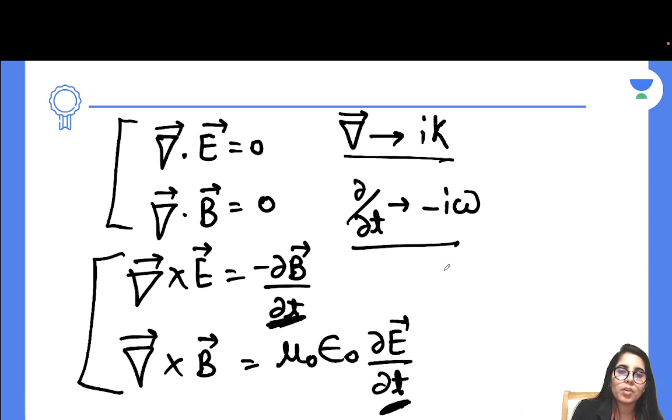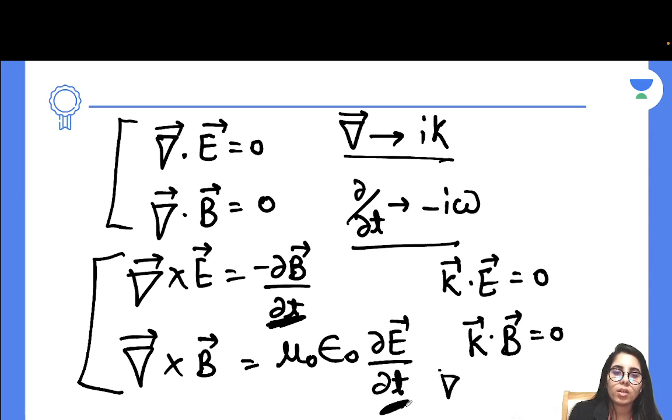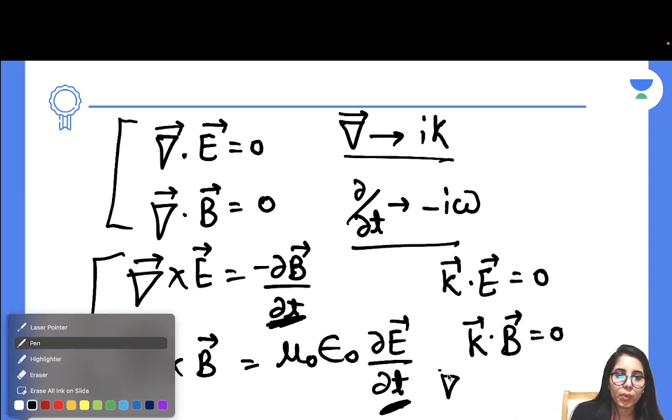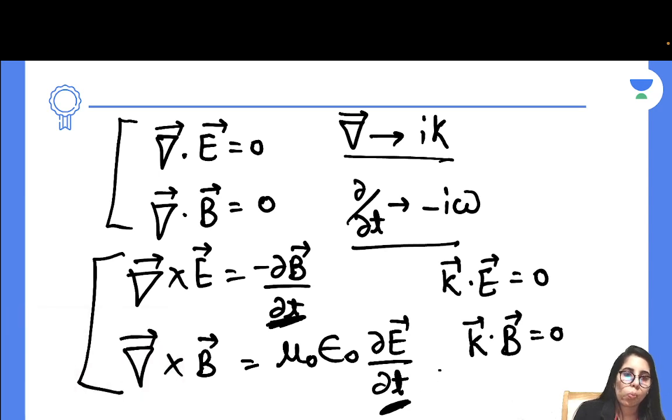I'm going to get the first one as K dot E equals zero. Simplified form: K dot B equals zero, where K is the propagation wave vector. Then the third one, I need to replace del with iota K.